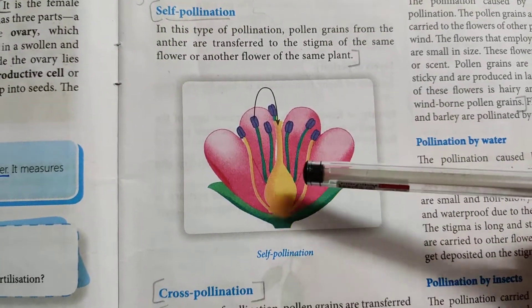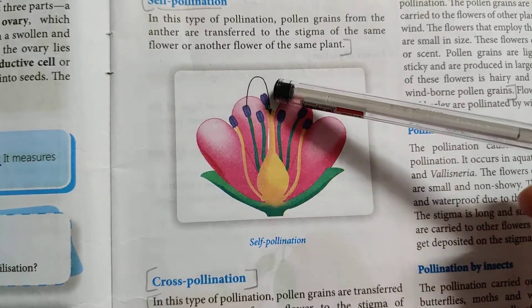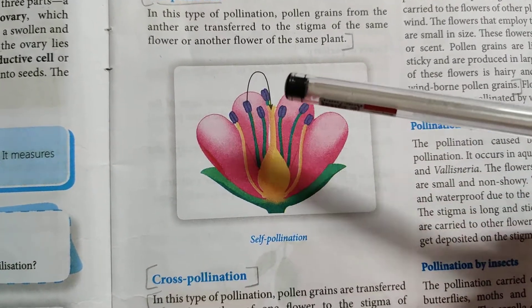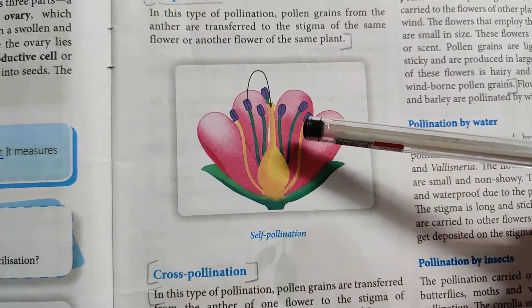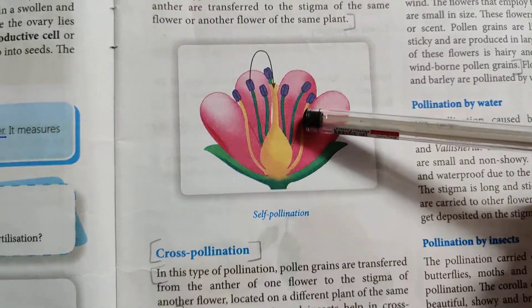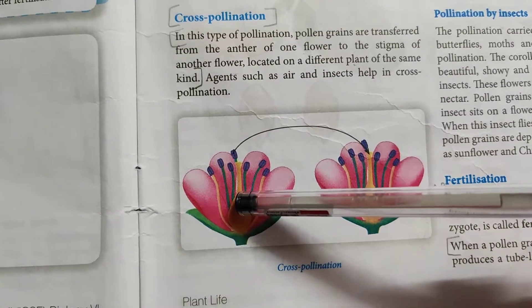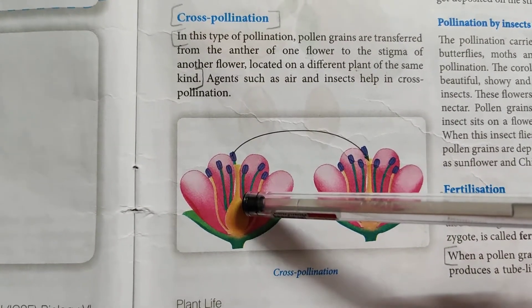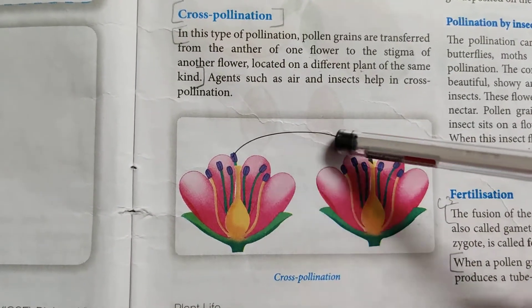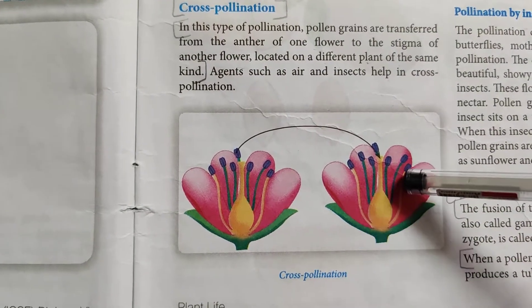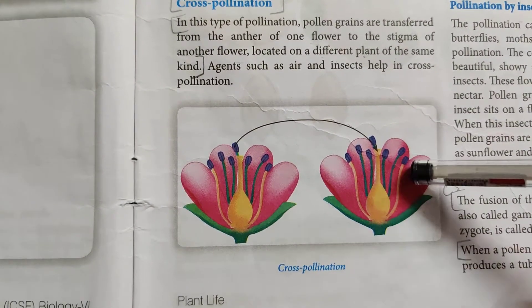In self-pollination, the pollen grains from the anther are transferred to the stigma of the same flower or of another flower on the same plant. Whereas in cross-pollination, the pollen grains are transferred from the anther of one flower to the stigma of another flower located on a different plant of the same kind.